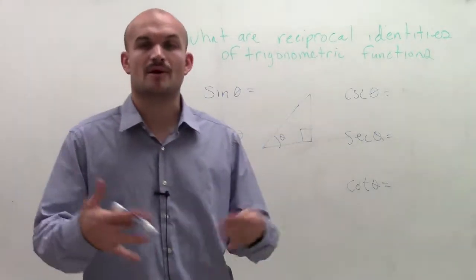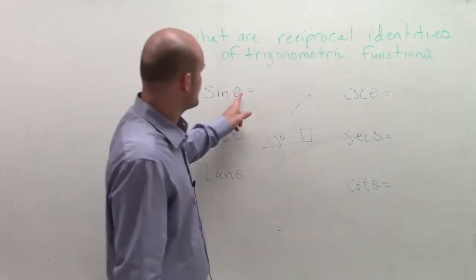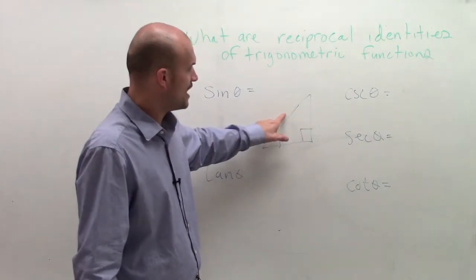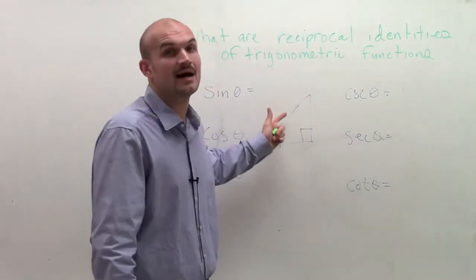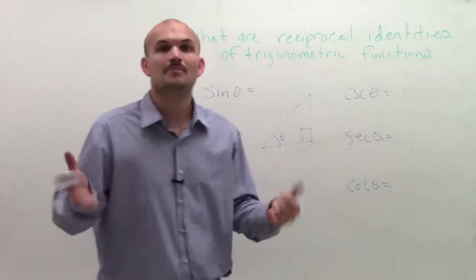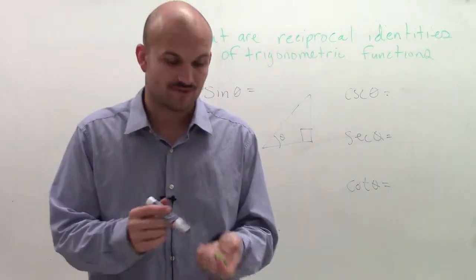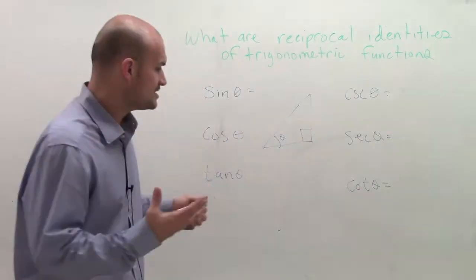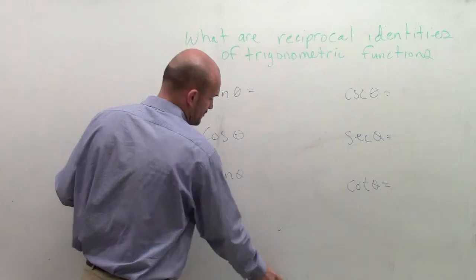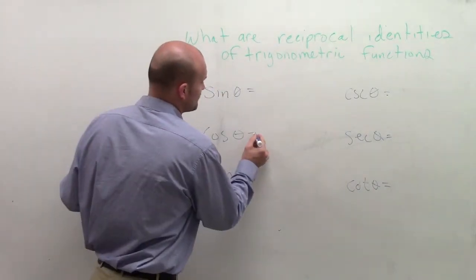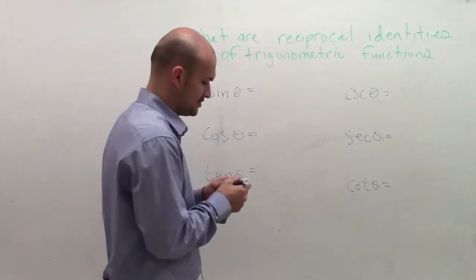So then we started talking about reciprocal identities. If the sine represented opposite over hypotenuse, if I was going to find the reciprocal of that, we'd say the cosecant represents the hypotenuse over the opposite. But this video isn't about the trigonometric functions using a right triangle. This is just actually reciprocals. So what we remember, hopefully, from using the right triangle, is that these functions are reciprocals of each other.